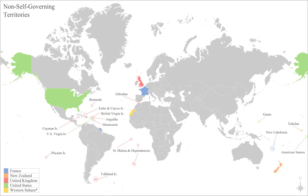The metropolitan state is the state that rules the colony. In ancient Greece, the city that founded a colony was known as the metropolis, a reference to the metropolitan state from the point of view of citizens who live in its colony. There is a United Nations list of non-self-governing territories.